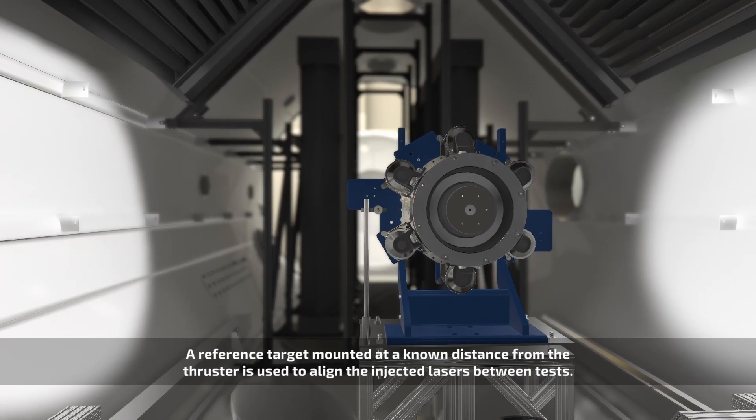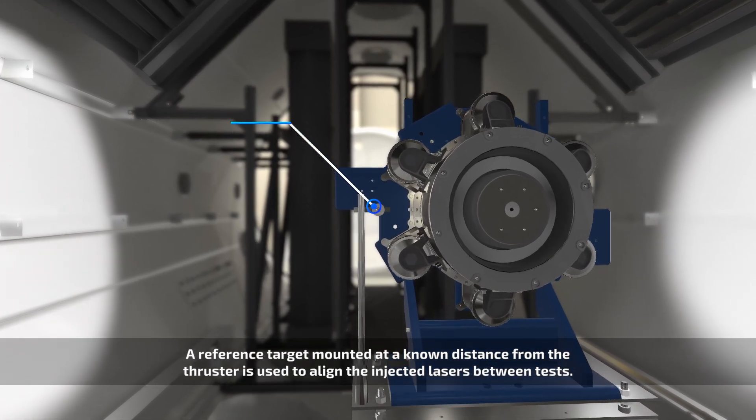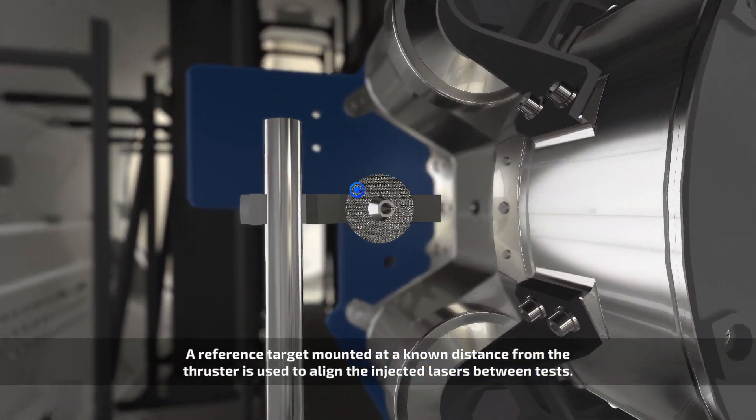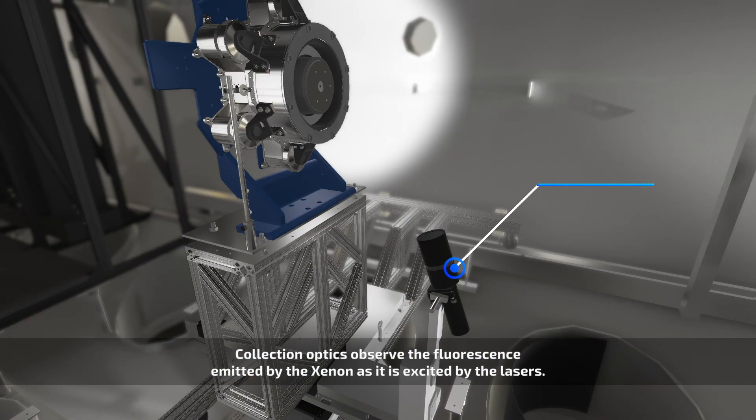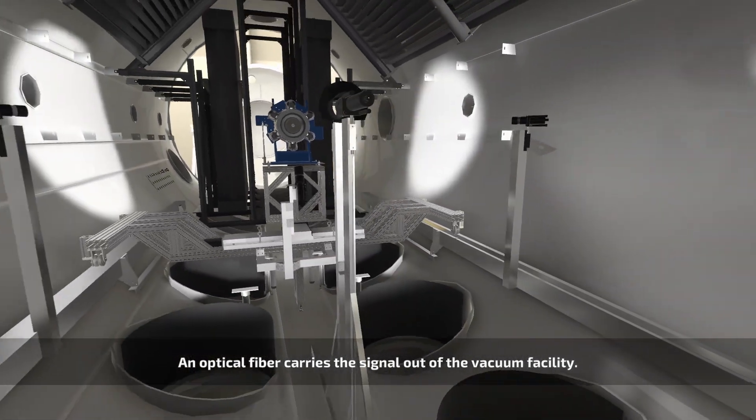A reference target mounted at a known distance from the thruster is used to align the injected lasers between tests. Two cameras monitor the positions of the injected laser beams relative to the reference target. Collection optics observe the fluorescence emitted by the xenon as it is excited by the lasers. An optical fiber carries the signal out of the vacuum facility.